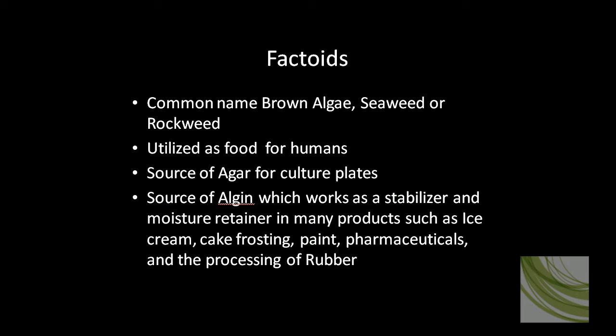Fucus has a lot of economic impact because it has quite a few different uses. It's utilized as food for humans. It's also a source of agar for culture plates. It is a source of algin, which plays roles in many different products, such as ice cream and cake frosting, paint, pharmaceuticals, and it's even necessary in the processing of rubber.